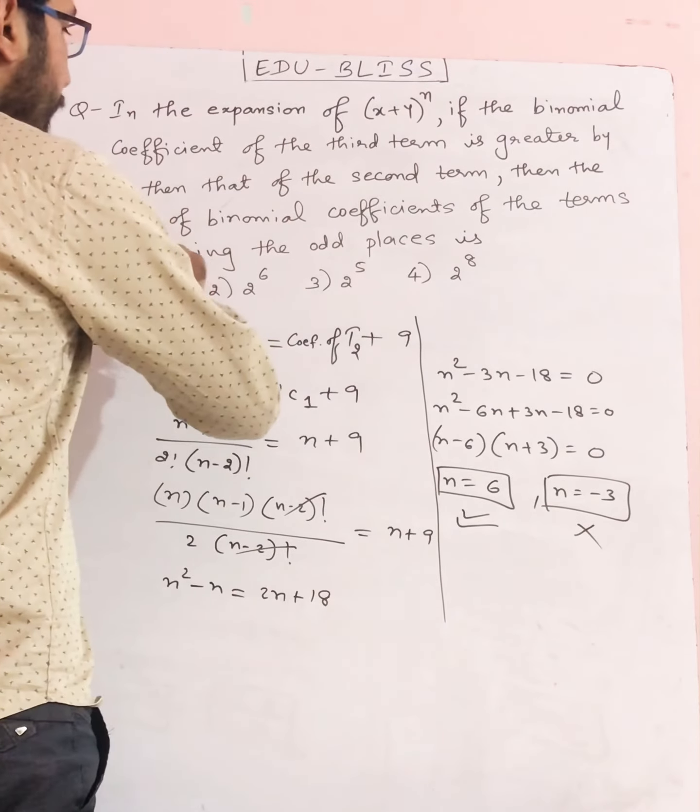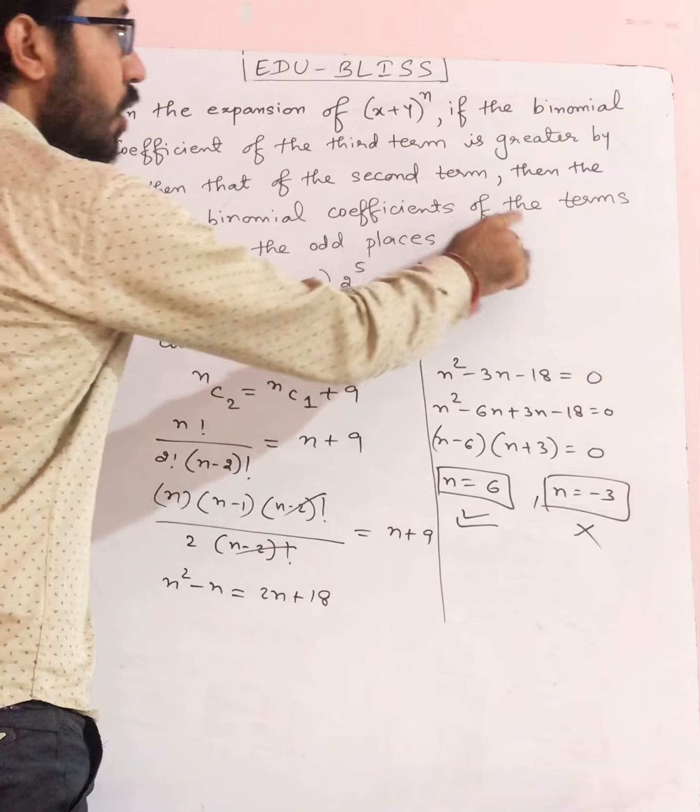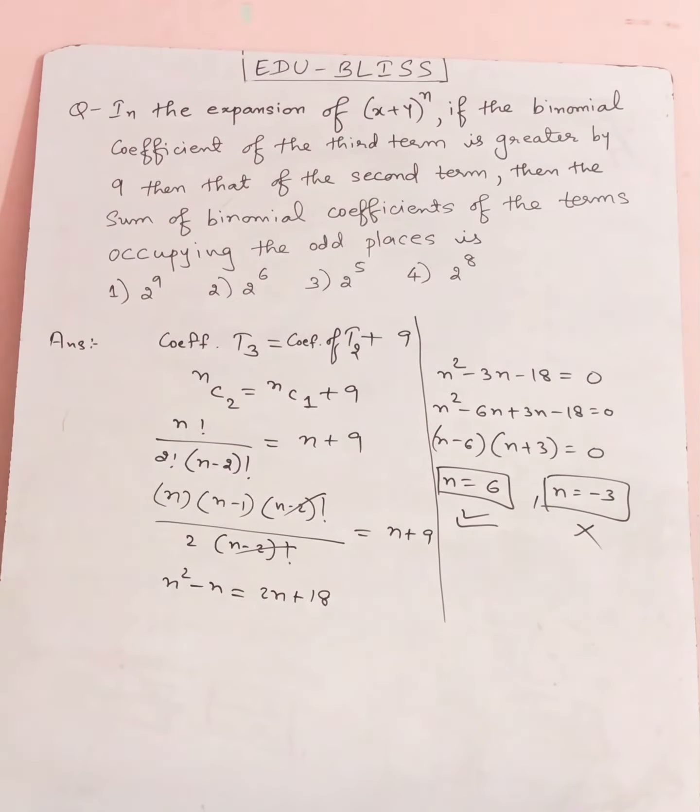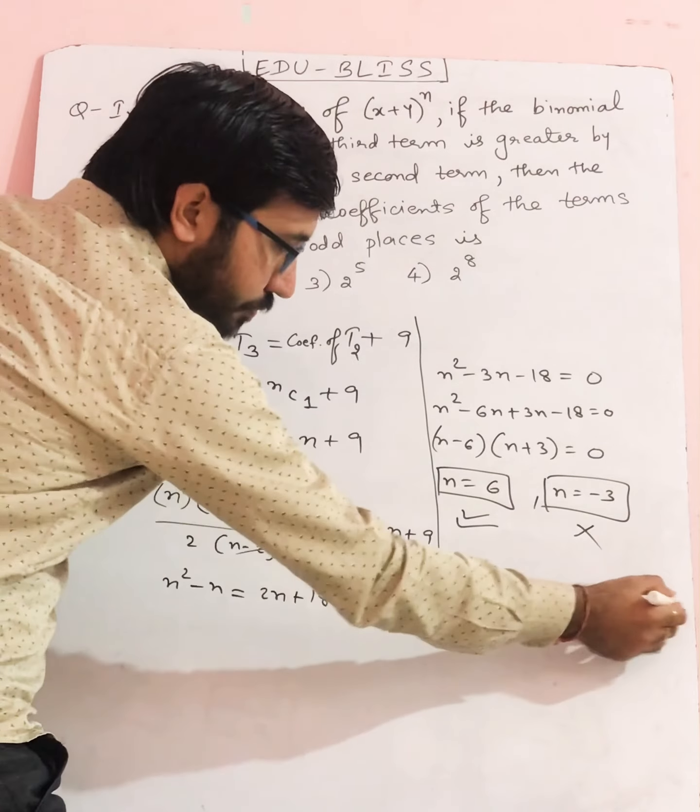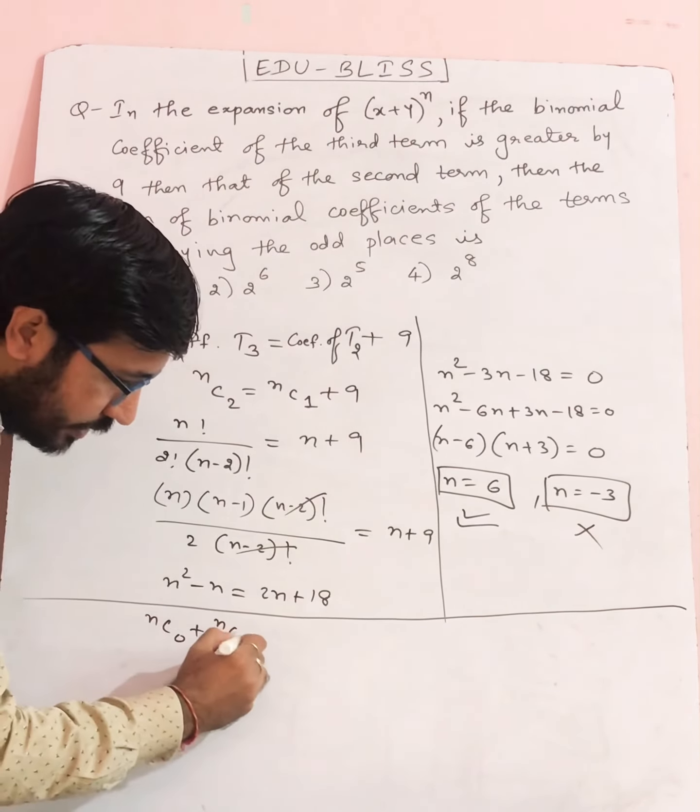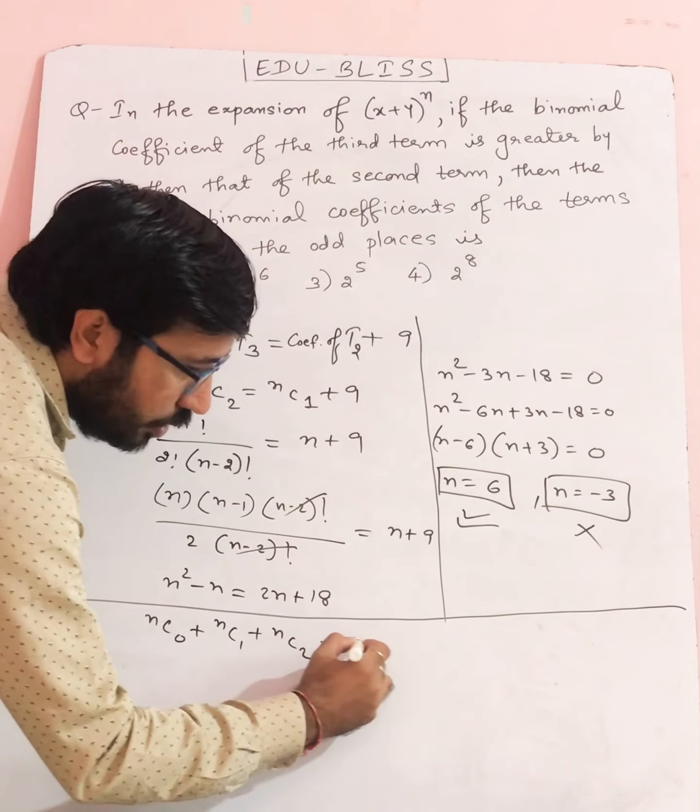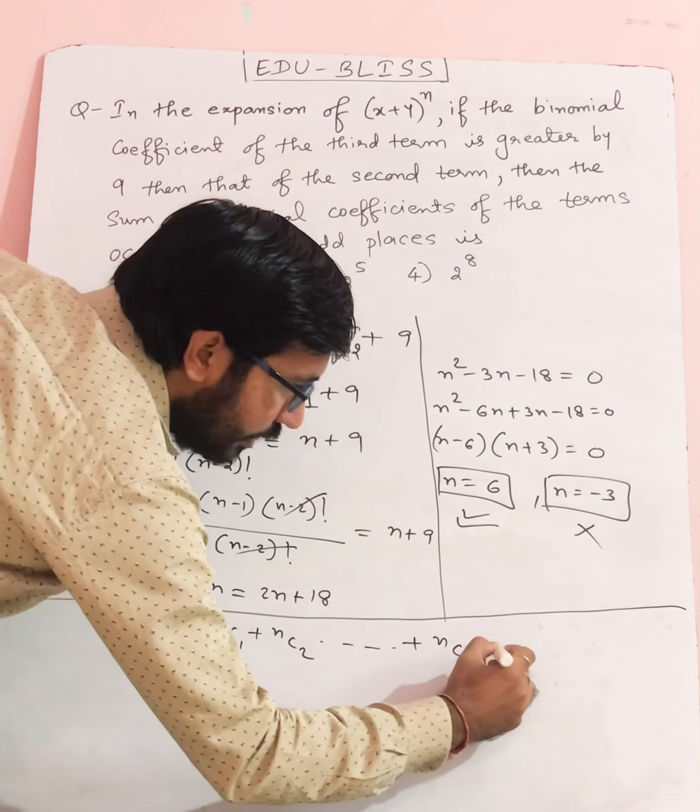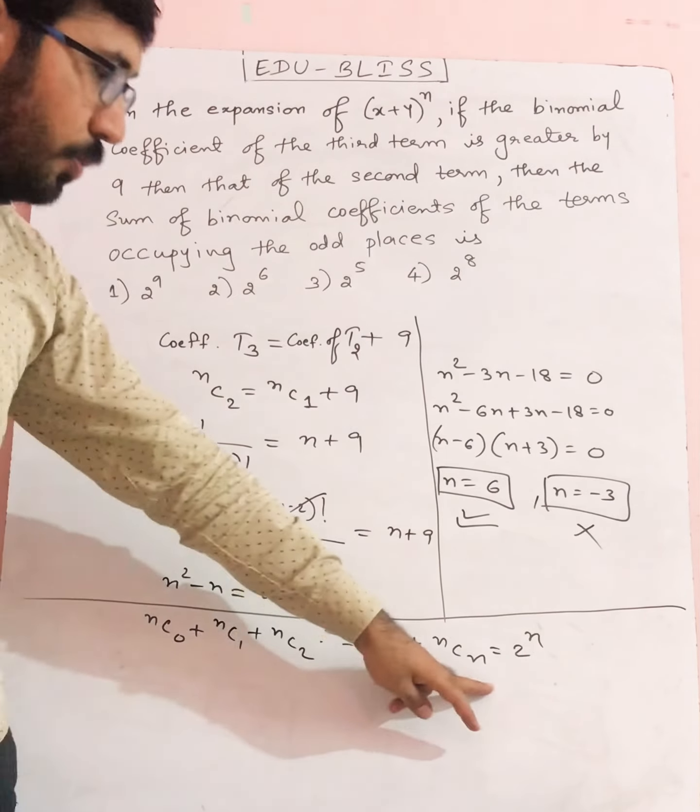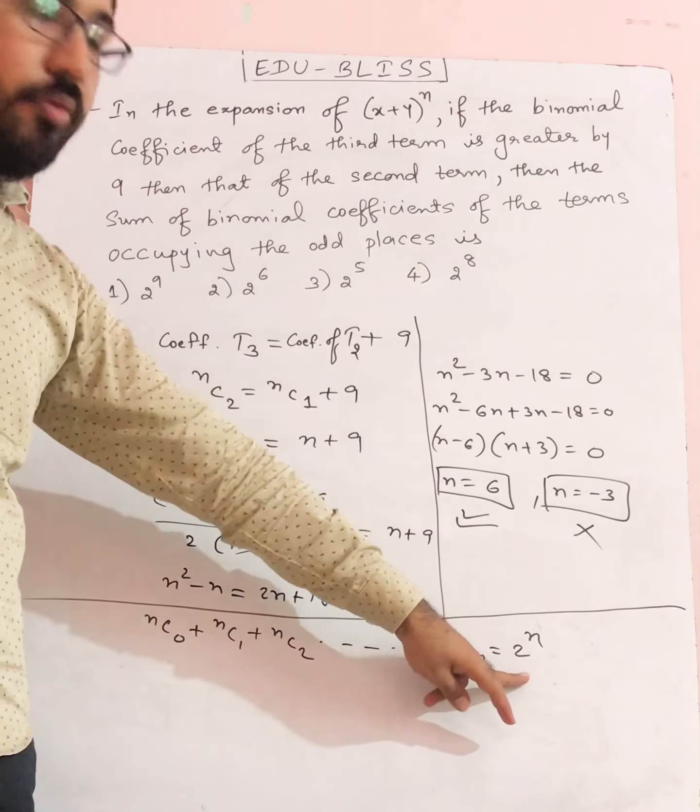Now what we have to find: the sum of binomial coefficients of the terms occupying the odd places. We know for the binomial, right, nC0 + nC1 + nC2 till nCn equals 2^n. The sum of all coefficients is always equal to 2^n.